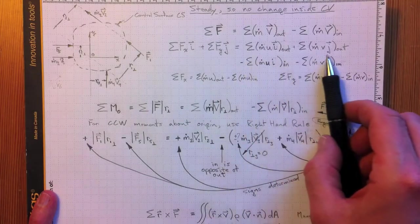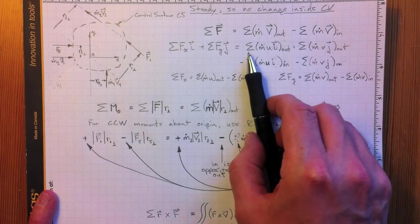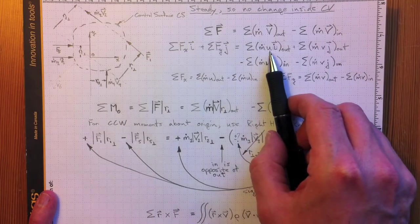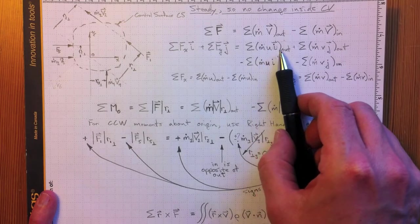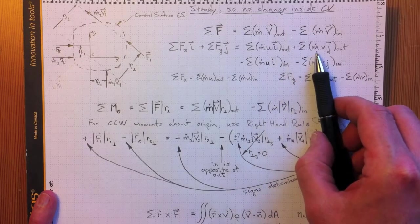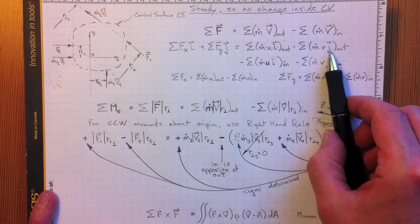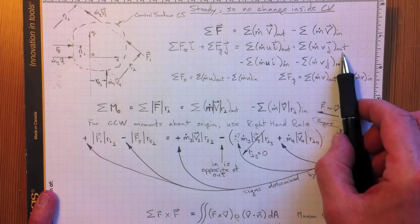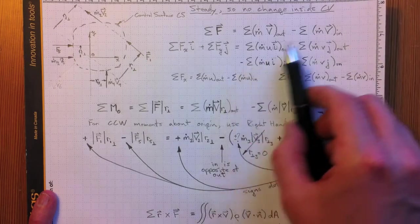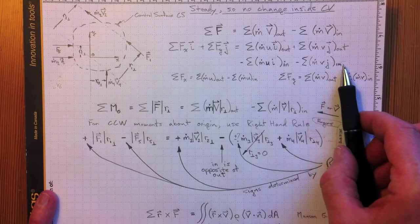Similarly, we can keep track of the components of the momentum out and the momentum in. First, the momentum out: mass flow times velocity component in the x direction times the x direction vector i out, plus mass flow times velocity in the y direction times the y direction vector, again summed over all of the elements where there's an outflow, then minus the inflow in the same way taking into account the components.